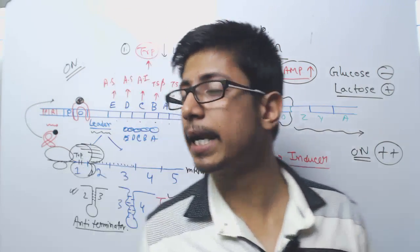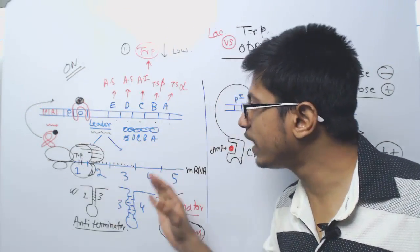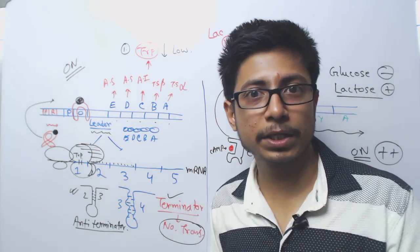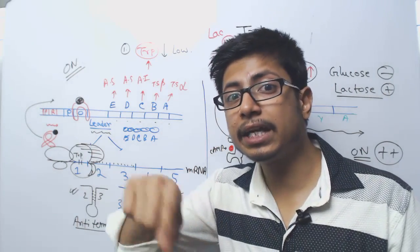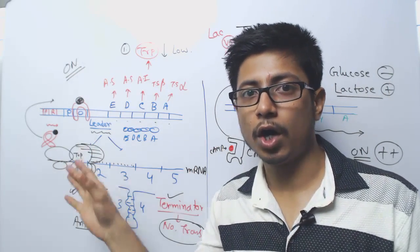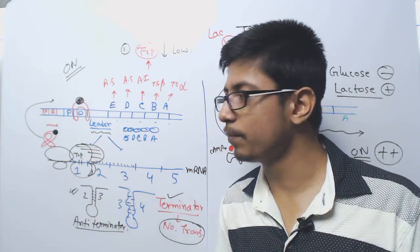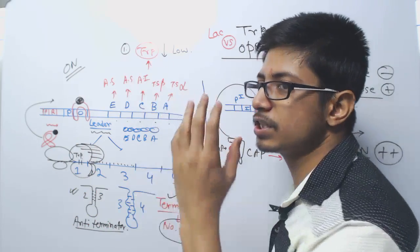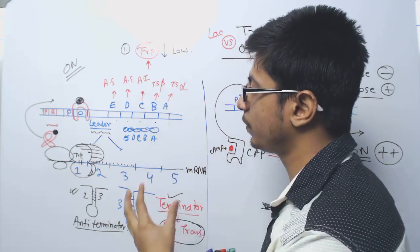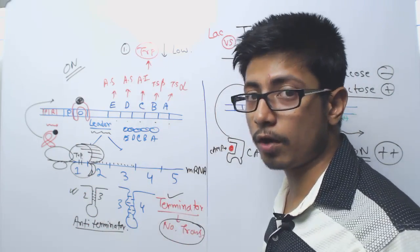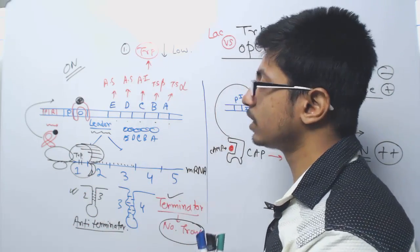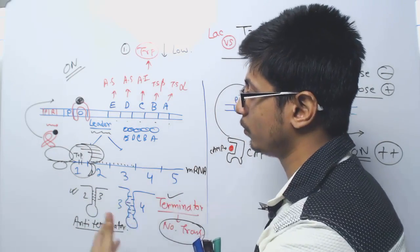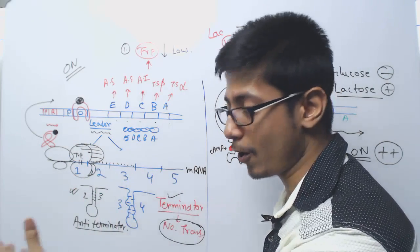On the other hand, in the tryptophan operon, tryptophan itself acts as an inhibitor or negative regulator of its own operon. That means if tryptophan concentration is high, the operon will be turned off. If tryptophan concentration is low, the operon will be turned on.